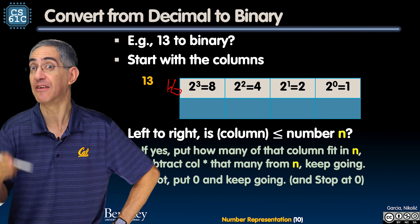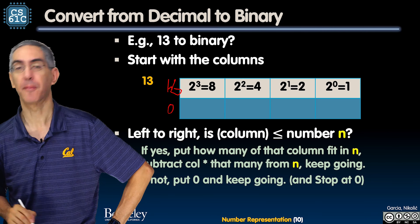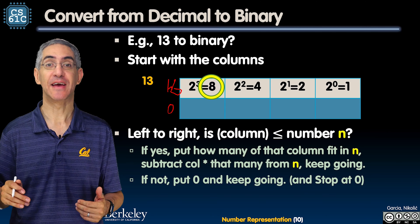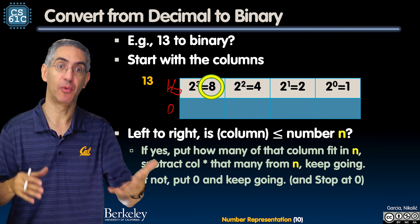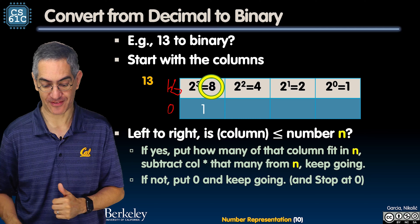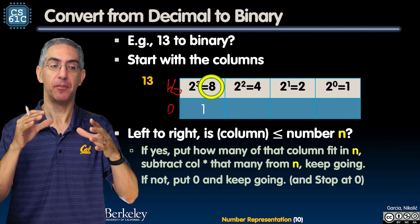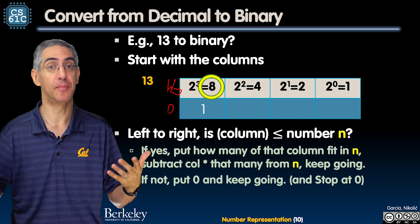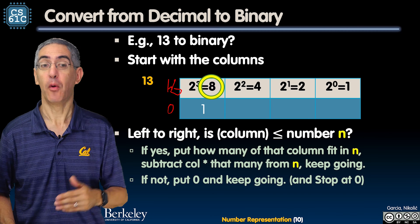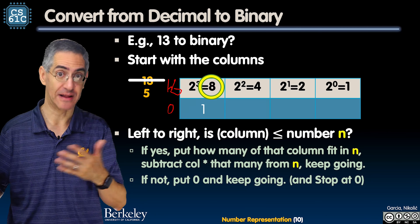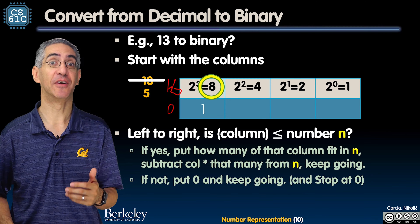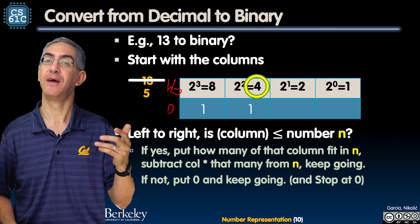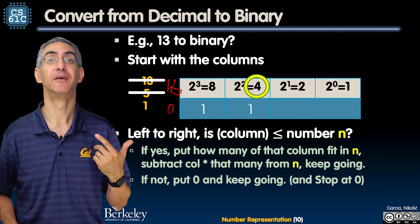We do the same thing: write our columns. The first column is always 1 (base to the zero), the second is base to the one, which is 16, then 256, etc. For A5: A is 10, so 10 times 16 is 160; plus 5 times 1 is 5. 160 plus 5 is 165. So hex A5 dollars equals 165 decimal dollars.